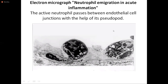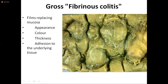This is an electron micrograph showing neutrophil immigration in acute inflammation. The active neutrophil passes between endothelial cells. The leukocyte passes between one and two endothelial cells at their junction, with half of its cell body in transit. And now, gross fibrinous colitis.